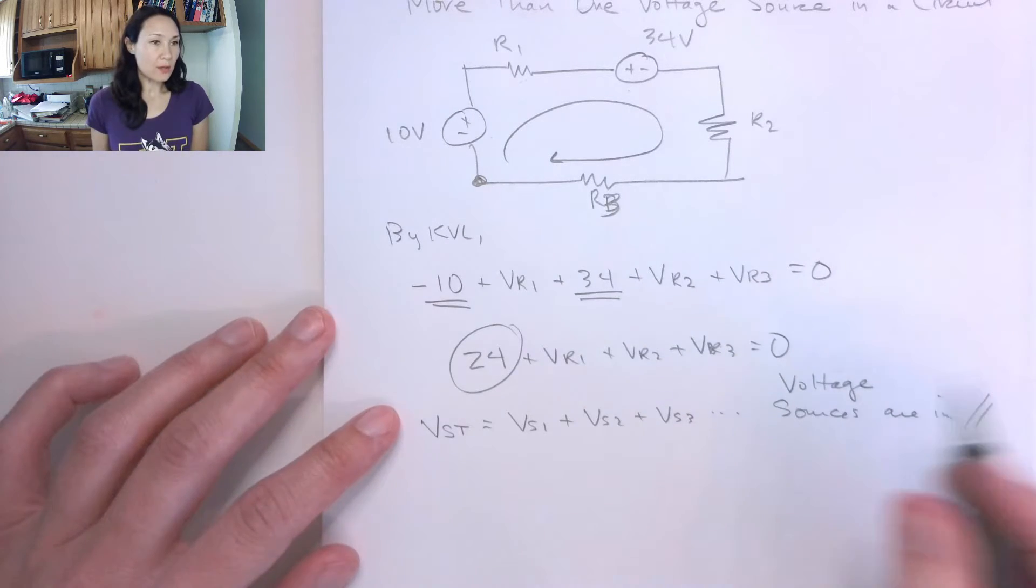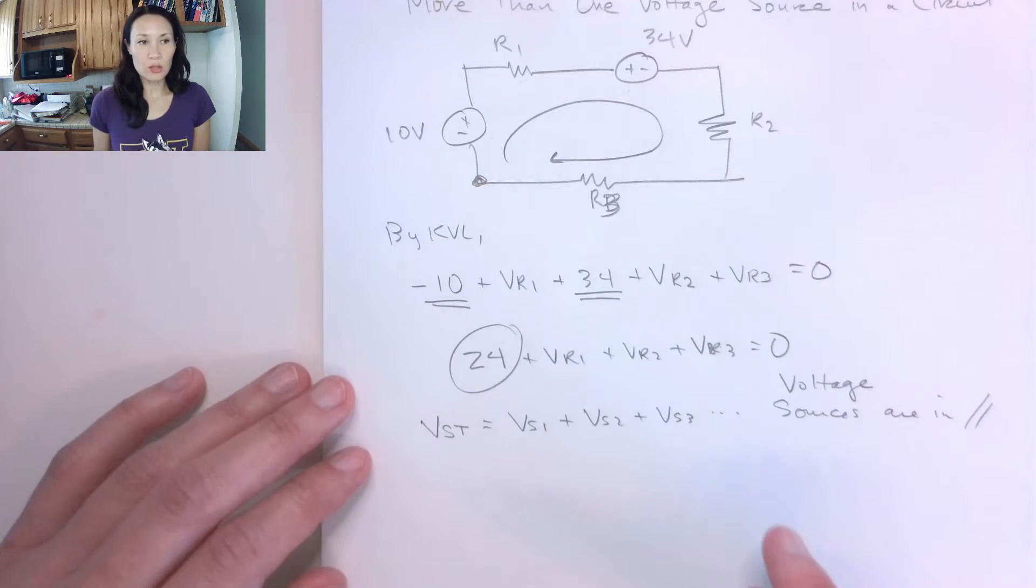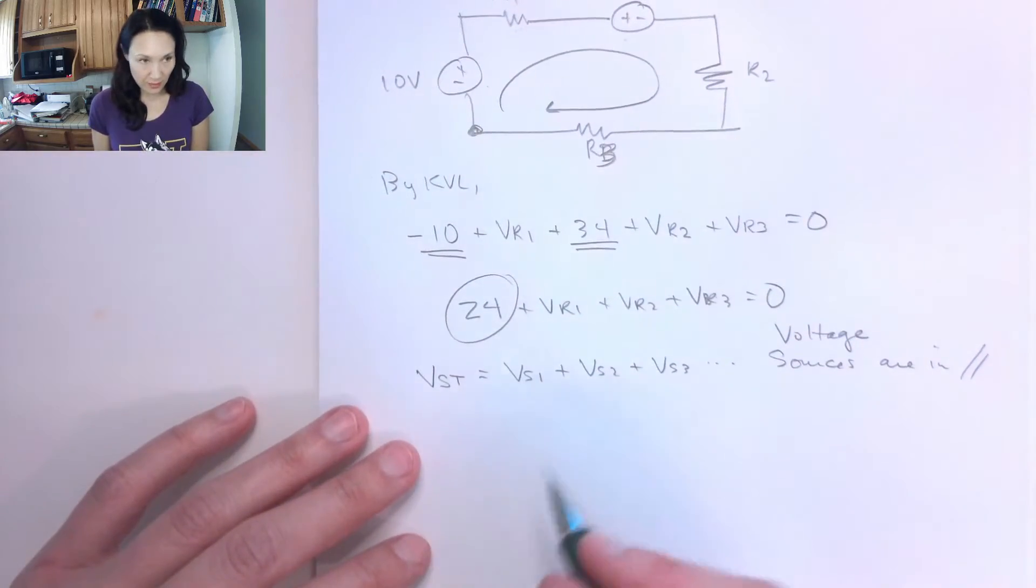So this is not true for current sources, this is only true for voltage sources, and this is a consequence of KVL.